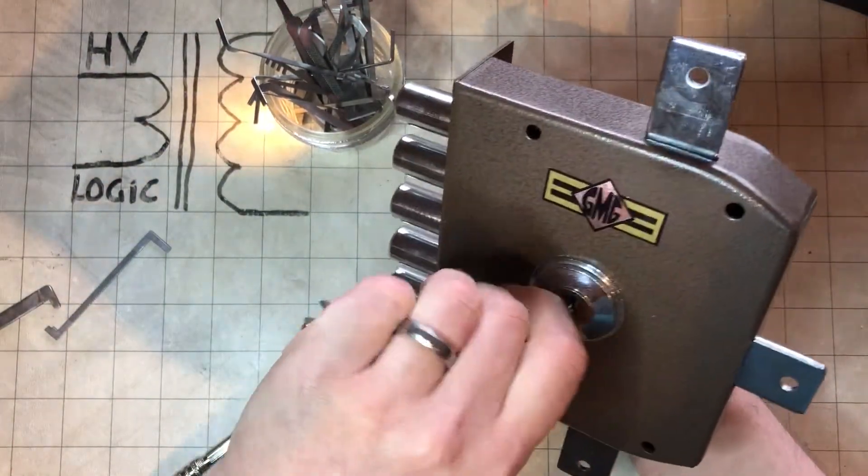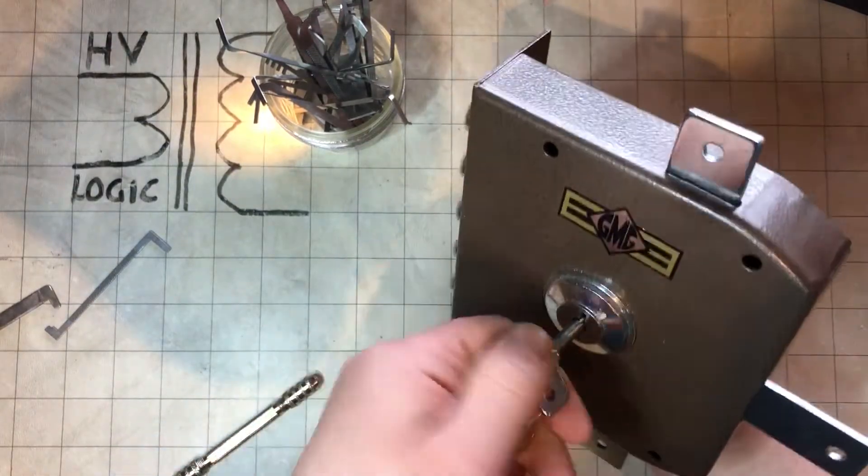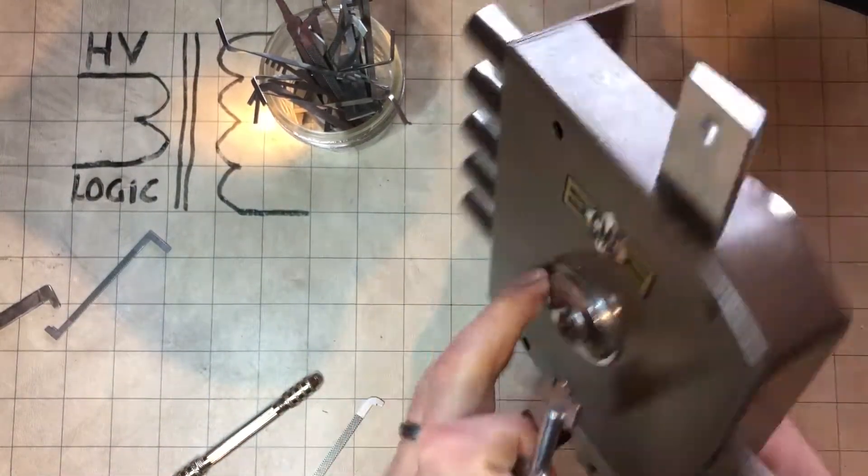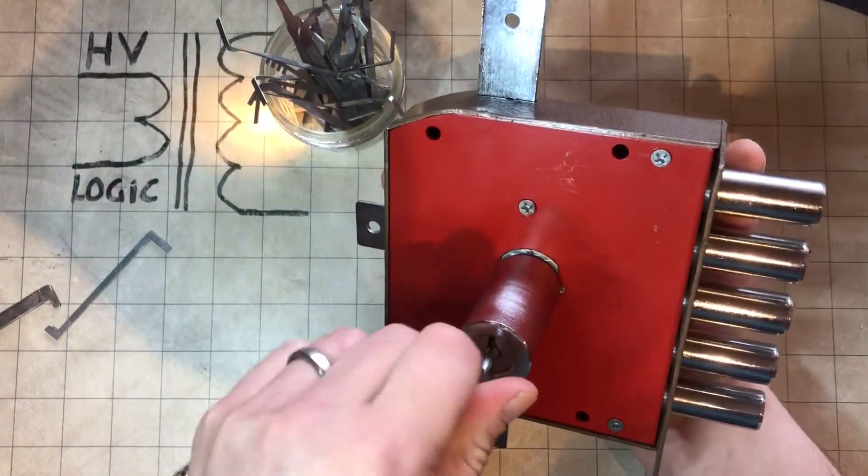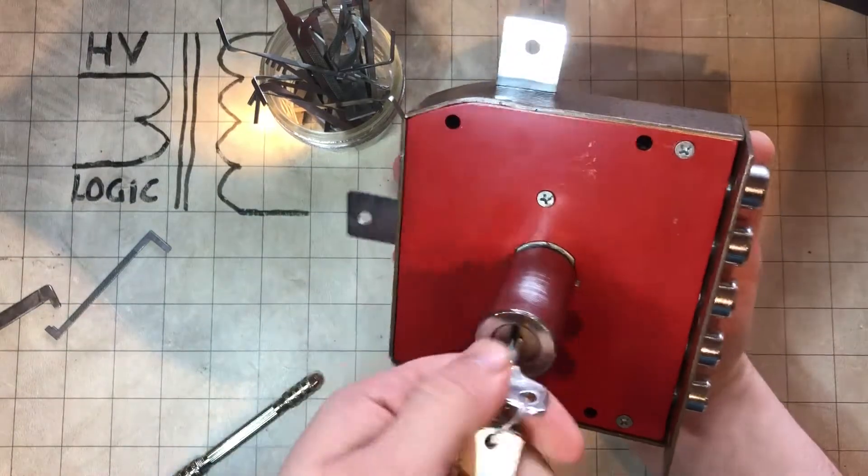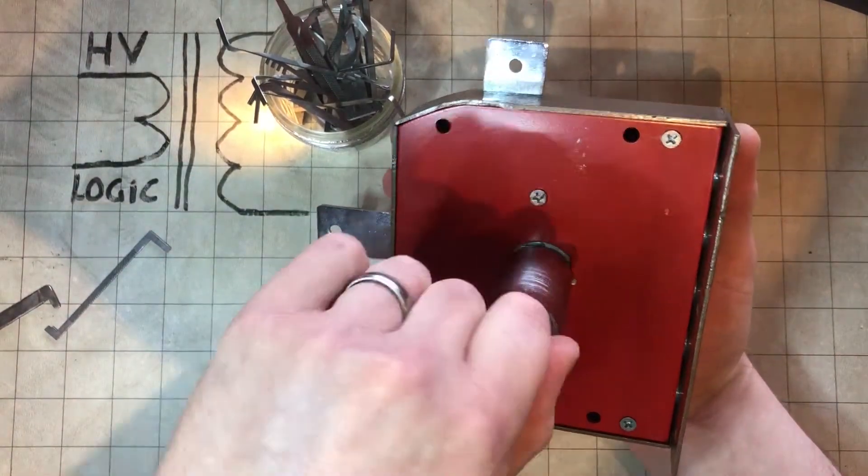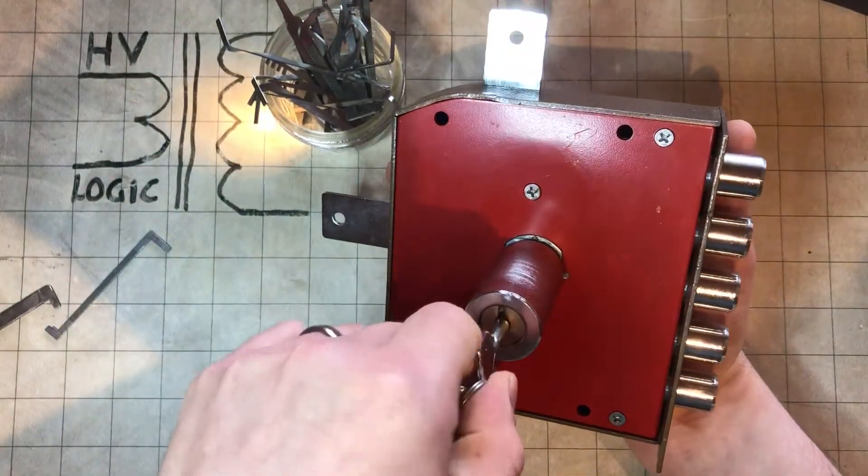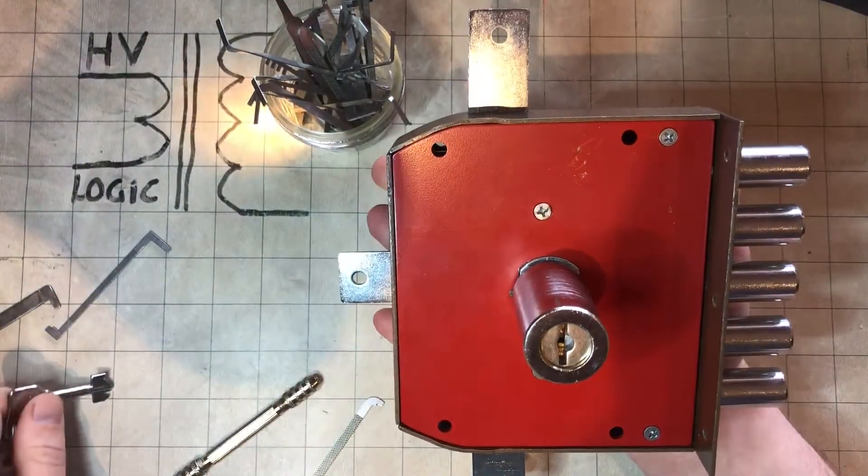This is the interior side that retracts the bolts. And then there's an exterior side which also operates. So it needs a full 360 to get it unlocked.